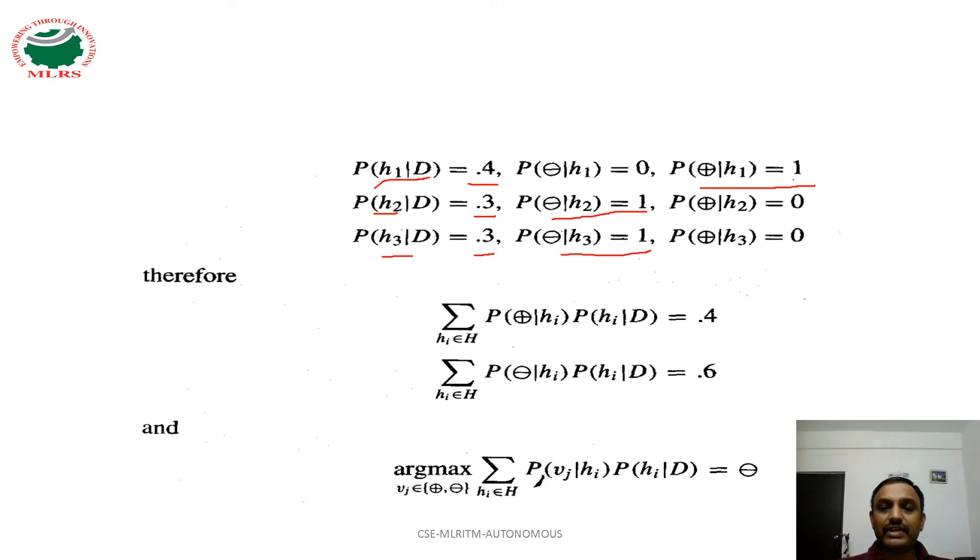In the case of H1 hypothesis, for positive hypothesis, we are taking probability as 1. In the case of H2 and H3, for negative value, we are taking probability as 1.